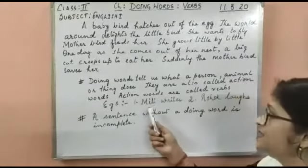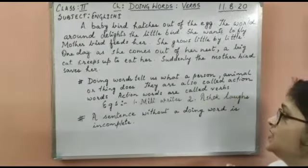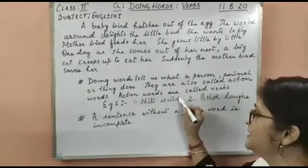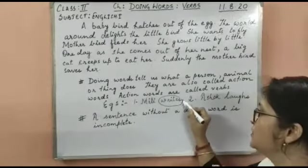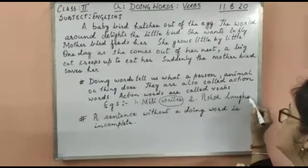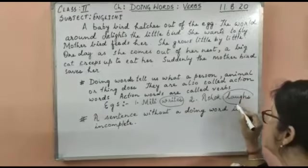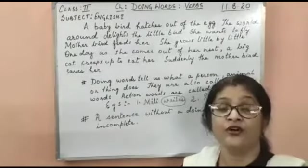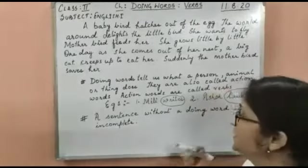For example: Millie writes — the word 'writes' is an action word or doing word. Ashok laughs — the word 'laughs' is an action word or doing word.